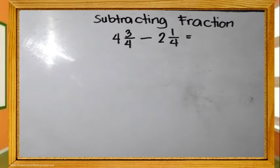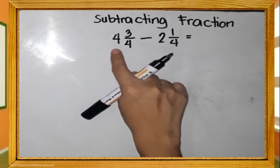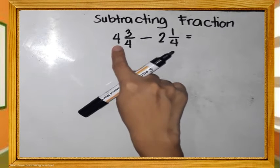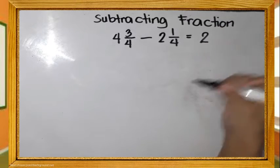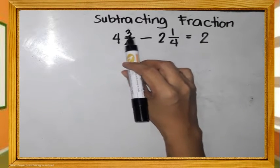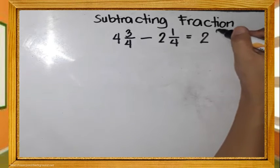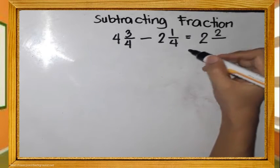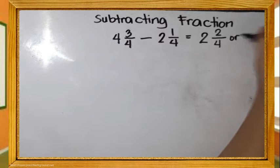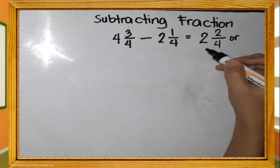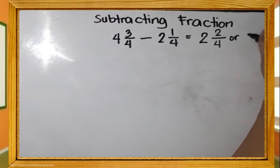Subtracting fractions — we have 4 and 3 fourths minus 2 and 1 fourth. Just like addition, we perform subtraction. Subtract the whole numbers: 4 minus 2 equals 2. Subtract the numerators: 3 minus 1 equals 2. Copy the denominator, 4. Do not forget to simplify — so 2 and 2 fourths equals 2 and 1 half.